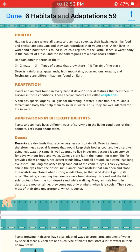Let's start with adaptation examples. A fish has special organs like gills for breathing in water. It has fins, scales, and a streamlined body that help it swim in water. Thus, fish are well adapted for living in water. Only fish can swim and live in water because they have special features — gills to take in oxygen and a streamlined body to swim easily.